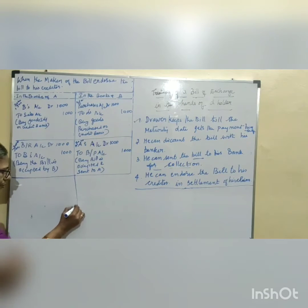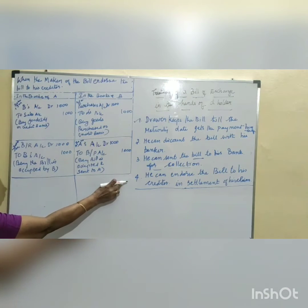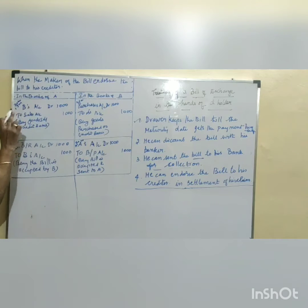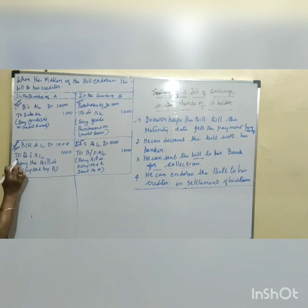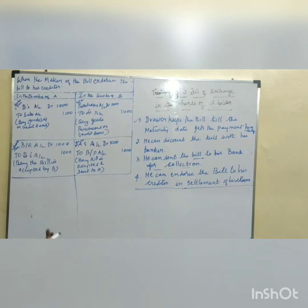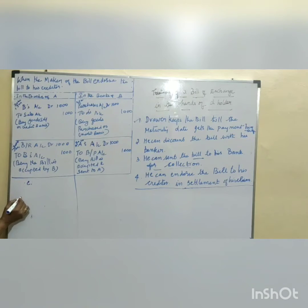In case of endorsement, the maker of the bill, that is A, endorses the bill in favor of his creditor. Now what will be the journal entries? This same 1000 rupees bill is passed on to the creditor. Let us name the creditor C. C is the creditor.